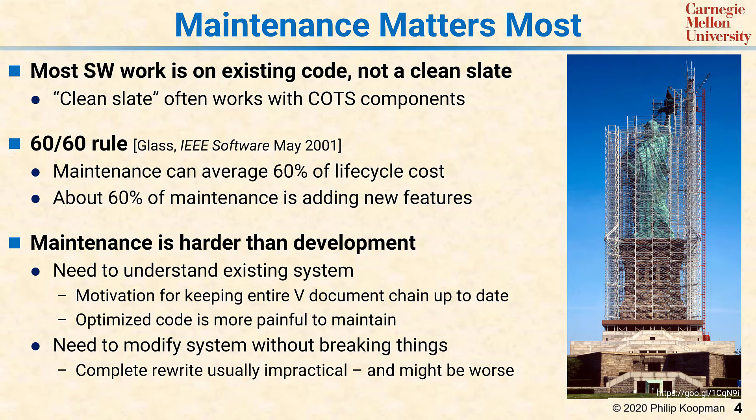Most programmers eventually get to a place where they look at a big mess of code and say this is going to be easier to rewrite and throw away than it is to fix. The problem is that doesn't scale. A related thought is: if the original programmer ended up with a big mess, why do you think you're going to be any different? If you use the same process and the same approach, all you'll end up with is a big pile of spaghetti that you understand but no one else can.